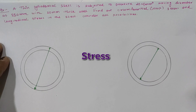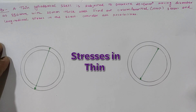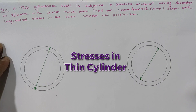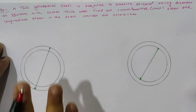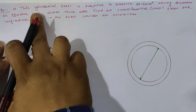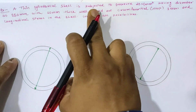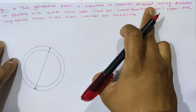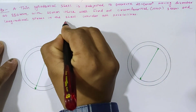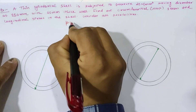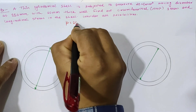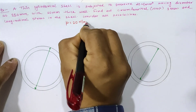Hello friends, today we are going to understand how circumferential stress as well as longitudinal stress for a thin cylindrical vessel is going to be calculated. We have been given a thin cylindrical vessel subjected to a pressure of 20 N per mm².